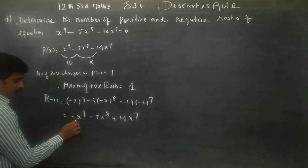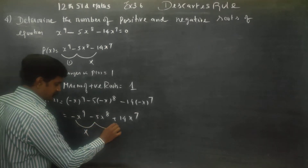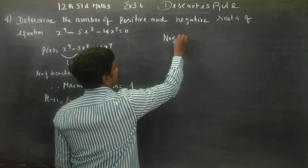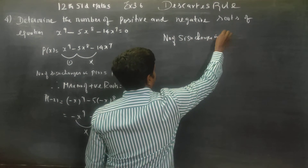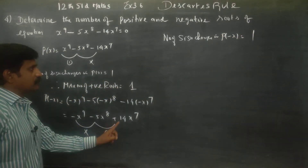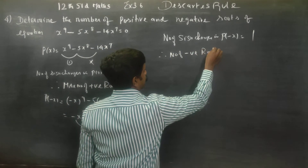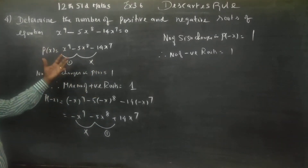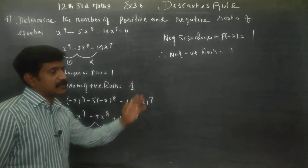Now count the number of sign changes in p of minus x. From minus x power 9 to minus 5x power 8 — no change, because minus to minus. Then from minus 5x power 8 to plus 14x power 7 — there is a change. So the number of sign changes in p of minus x is 1. Therefore, the number of negative zeros or negative roots is 1. In p of x, how many changes — those are positive roots. In p of minus x, how many changes — those are negative roots.